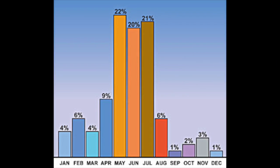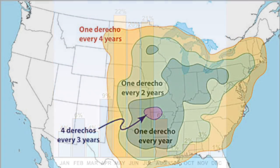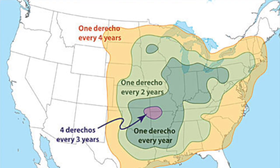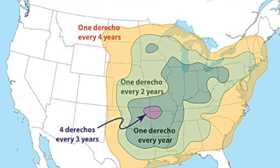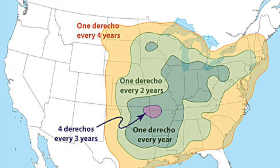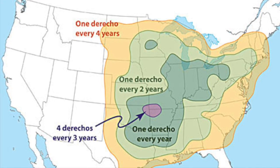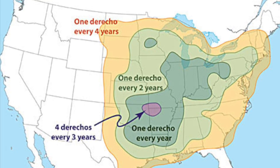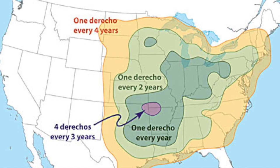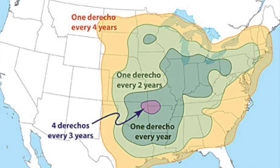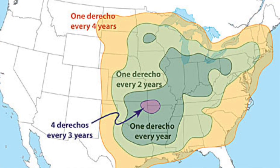Derechos are most common in the late spring and summer. The area they are most common is in the central United States. Derechos need strong thunderstorms to form, and the central United States is a region where cold, polar air from the north meets moist, subtropical air from the south.